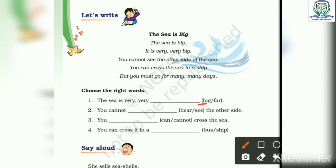You cannot see the other side. Number three: You can cross the sea. And number four: You can cross it in a ship.